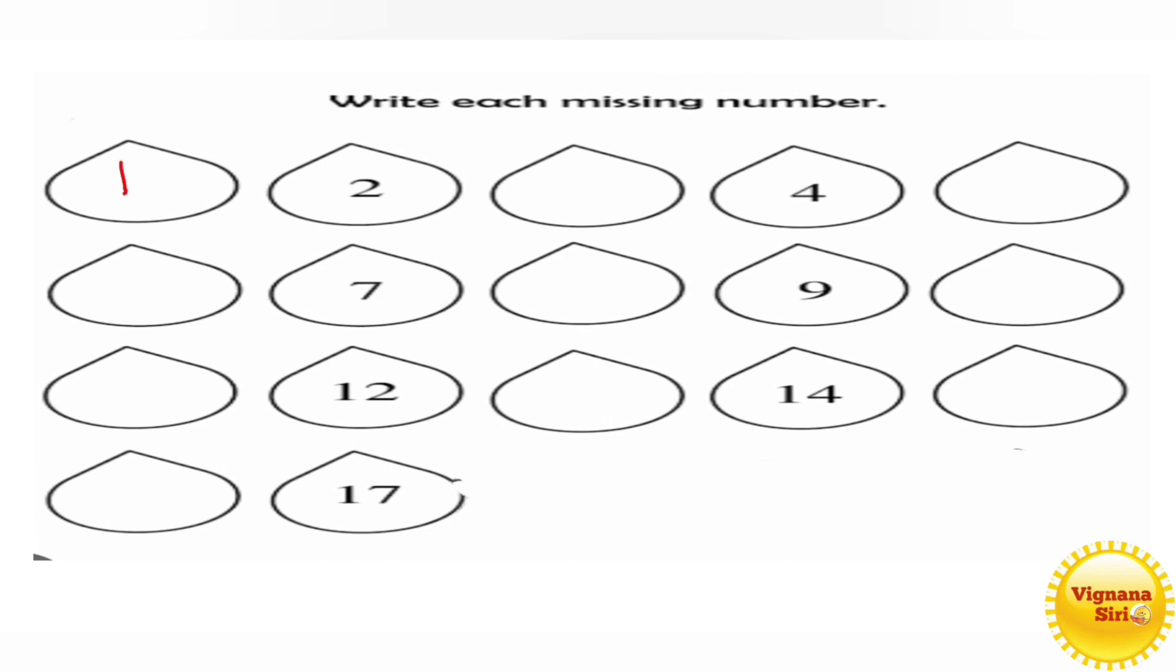What is the first number? 1. After 1, 2 is there. After 2, 3. After 3, 4, 5. Next, 6, 7, 8, then 9, 10. Right?